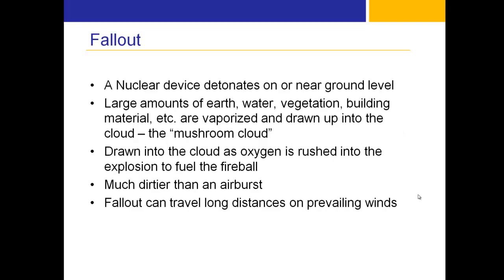When a nuclear device detonates on or near ground level, large amounts of earth, water, vegetation, and building materials are vaporized and drawn up into that classic mushroom cloud as oxygen rushes in to fuel the fireball. This is much dirtier than an airburst. If a nuclear bomb detonates higher in the atmosphere, you don't really have fallout — just direct radiation from the explosion itself — but fallout from a ground burst can travel long distances on prevailing winds.